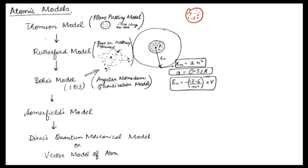J.J. Thomson proposed this atomic structure, assuming that the atom consists of electrons distributed in a positively charged sphere of radius around 10 to the power minus 10 meters — the radius of the atom. However, this model was not successful because it could not explain all the features of the optical spectra of hydrogen, or why the spectra change with atomic number, or why the spectra of hydrogen and helium are different.